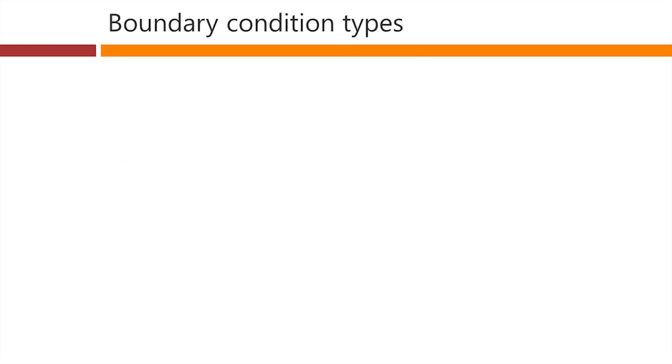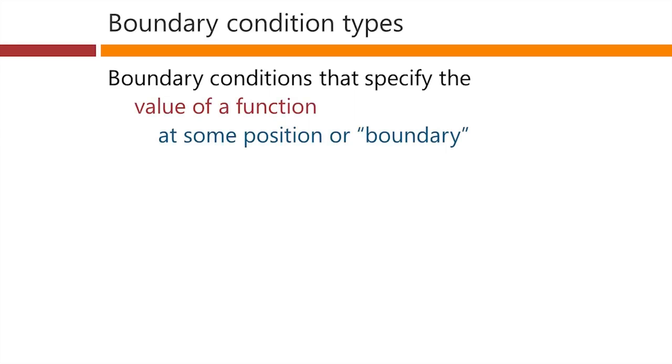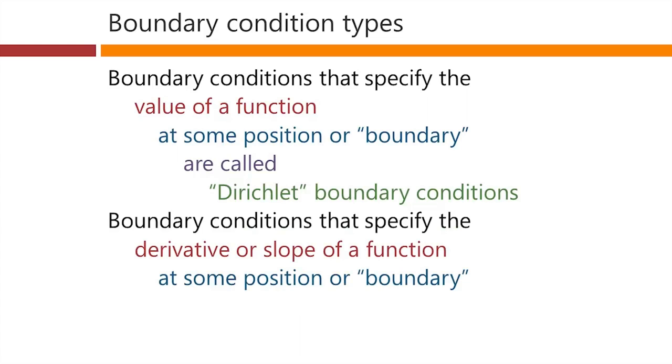We've seen two different types of boundary conditions. Boundary conditions that specify the value of a function at some position or boundary, that was the first example we looked at, are called Dirichlet boundary conditions. Boundary conditions that specify the derivative or the slope of a function at some position or boundary are called Neumann boundary conditions.